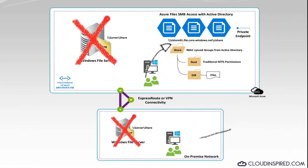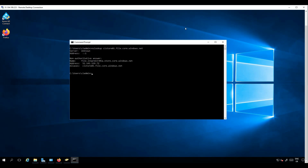Instead of users connecting internally within the virtual network, we will now set up a private endpoint to permit any users outside the Azure virtual network to connect privately, not over the internet. This allows connections using a secure private IP address from within the address space of your virtual network. Users can then connect to the Azure file shares from on-premise using either a VPN or ExpressRoute connection with private peering. Running nslookup to our storage address, we can see it points to an external public IP with no private aliases assigned.